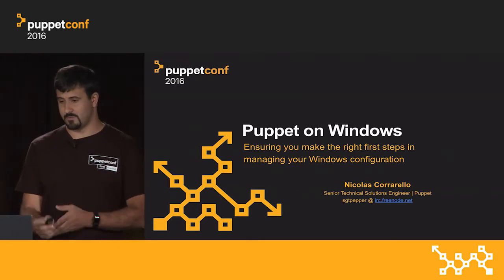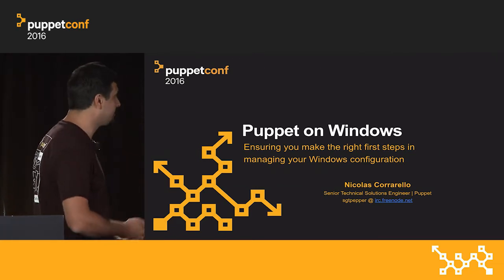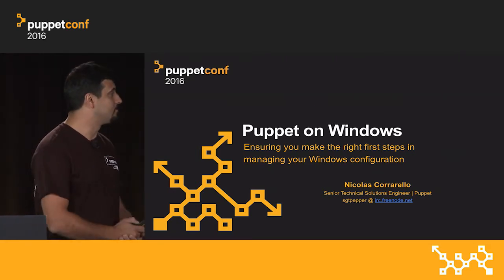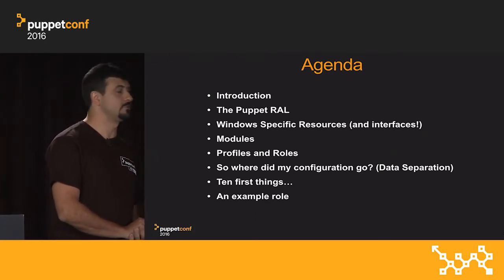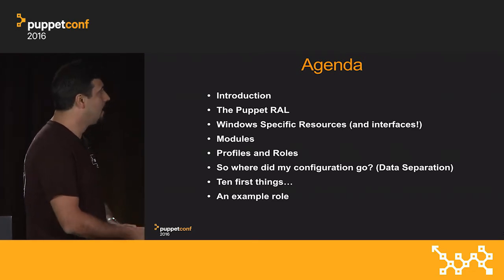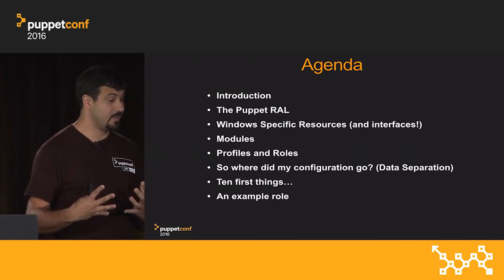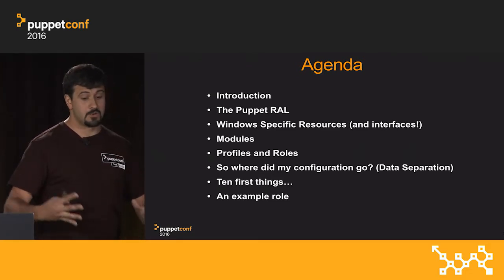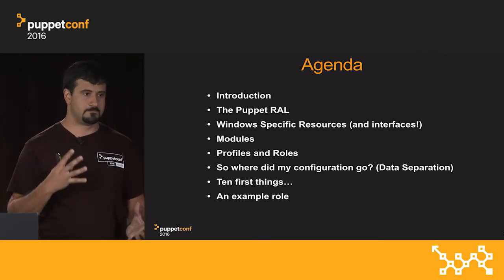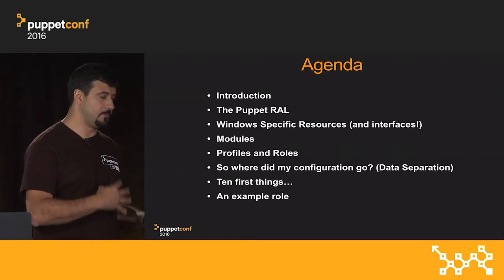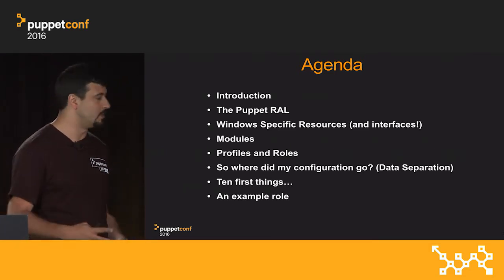I want to give you a very quick overview of what we're doing today. This is the first talk on the Windows track, so I'll be warming up the audience. We have the main event coming later — guys like Rob Reynolds and Ethan Brown, just completely mind-blowing. I'm going to talk about the Puppet Resource Abstraction Layer, specific Windows resources, component modules, how to structure your code, how to make the right scalable models, data separation, and the right first steps.